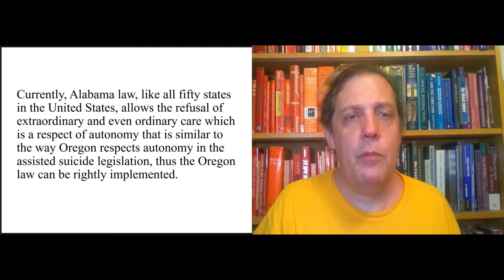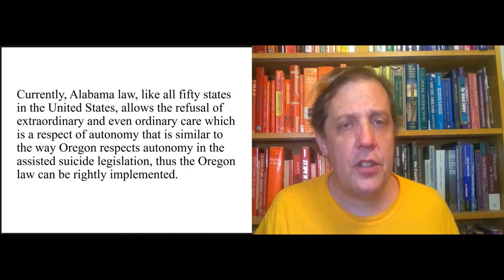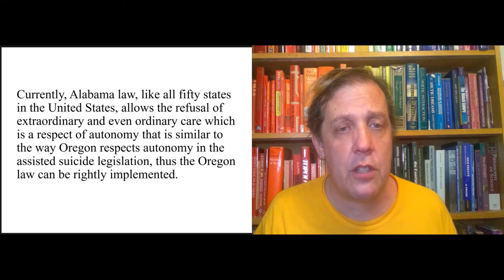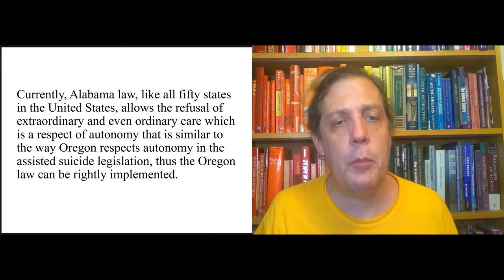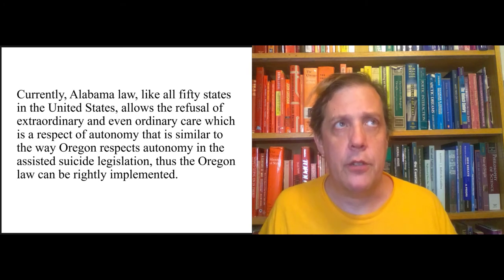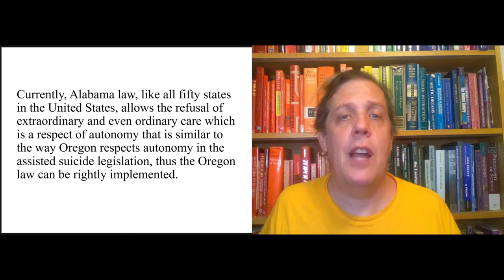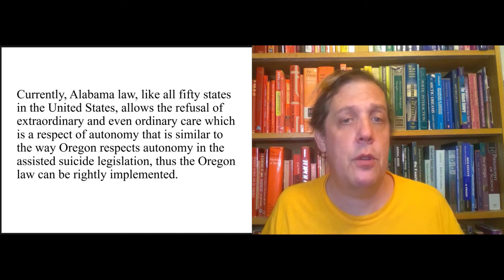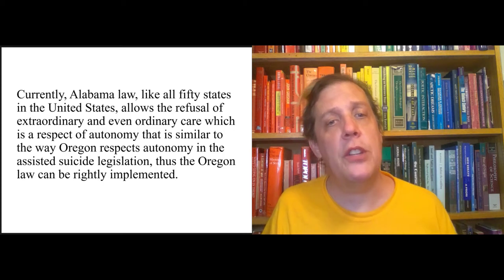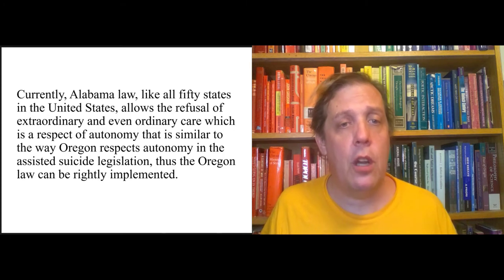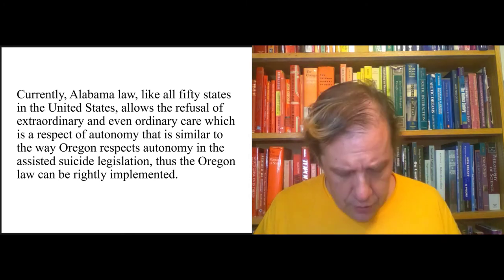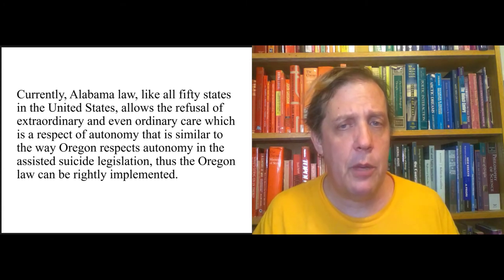Here's my sample sentence: 'Currently, Alabama law, like all 50 states in the United States, allows the refusal of extraordinary and even ordinary care, which is a respect of autonomy that is similar to the way Oregon respects autonomy in the assisted suicide legislation. Thus, the Oregon law can be rightly implemented.' Some context: this was from when I lived in Alabama 20 years ago and was teaching bioethics. A standard bioethics topic is assisted suicide, and this was a paper arguing that Alabama should implement a law similar to Oregon's, which allows for physician-assisted suicide in certain highly select circumstances. But we're not talking about the content of the paper — we're talking about its structure, its writing.